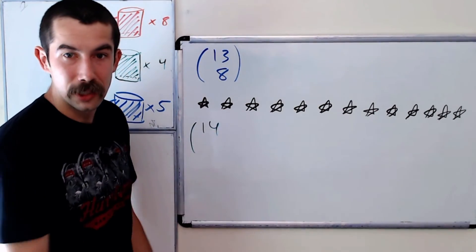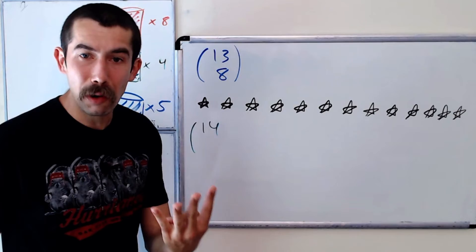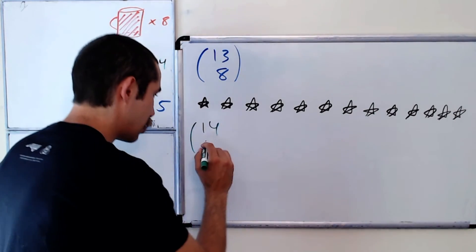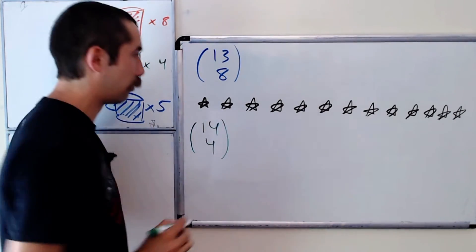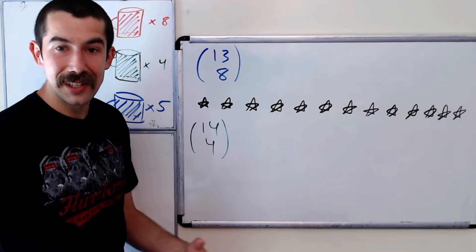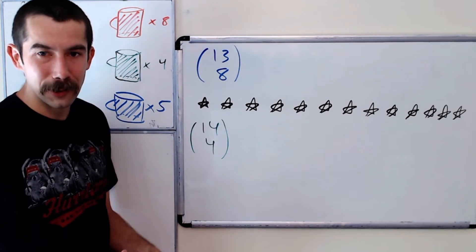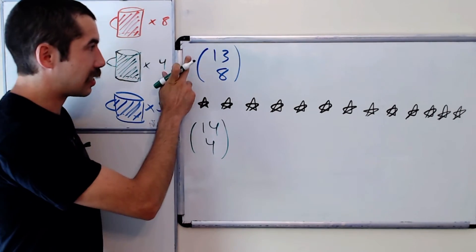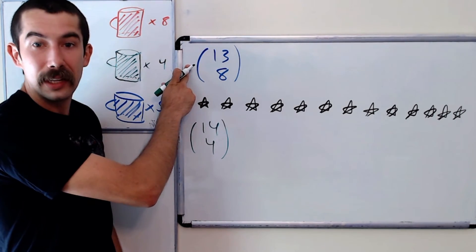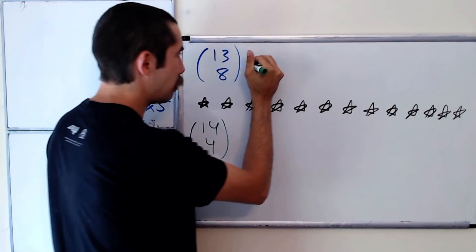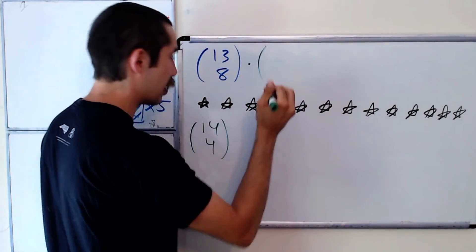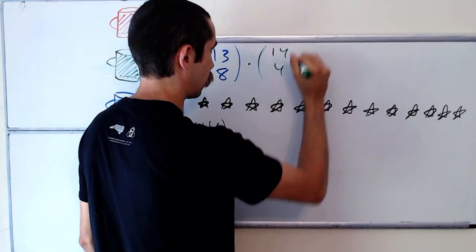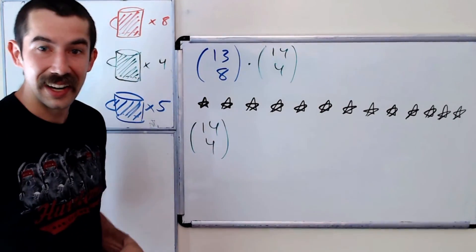There's 14 gaps to choose from, and we need to fill four of them with green mugs. So that's 14 choose 4. So to answer the question, how many total ways are there to arrange these 17 mugs? It's the number of ways to arrange the red and blue mugs, times the number of ways to place in the green mugs. And that's the answer.